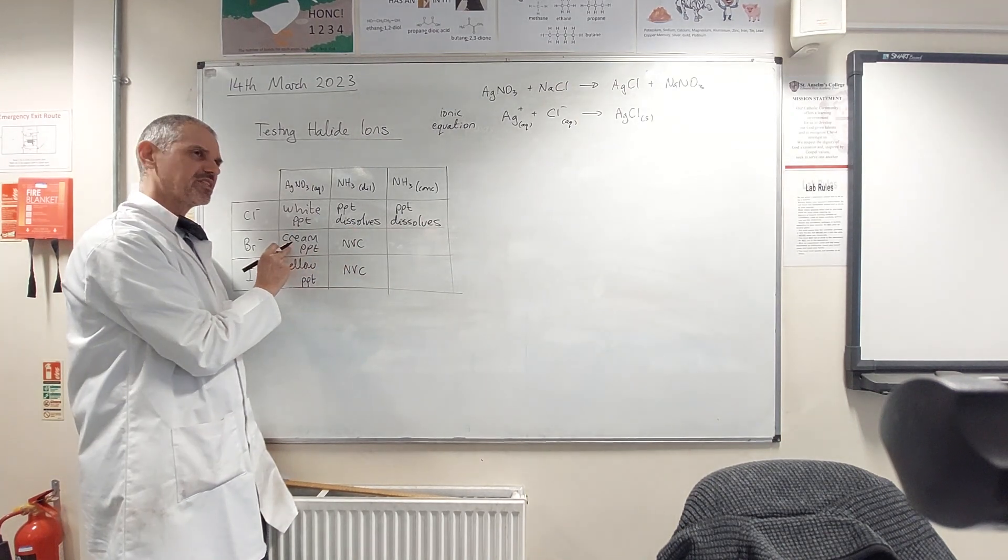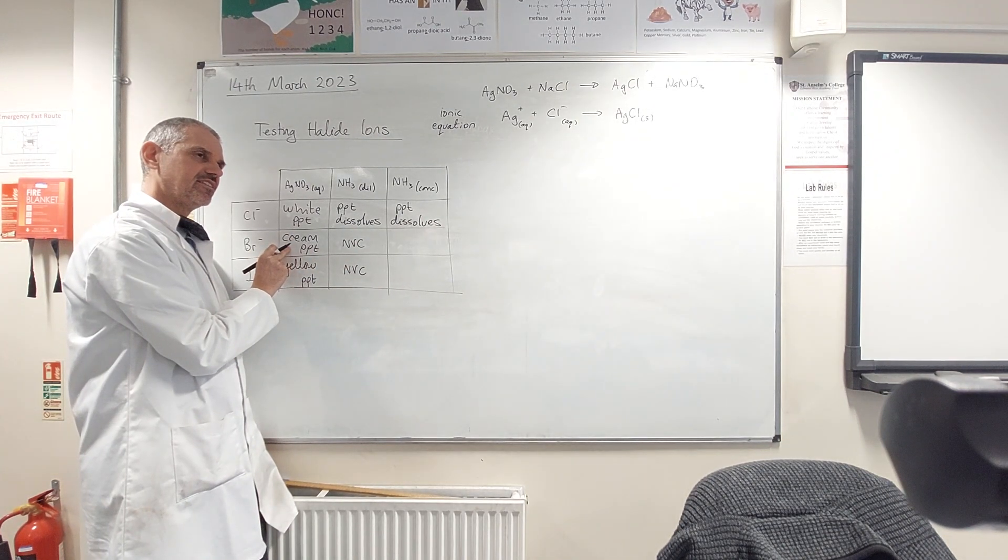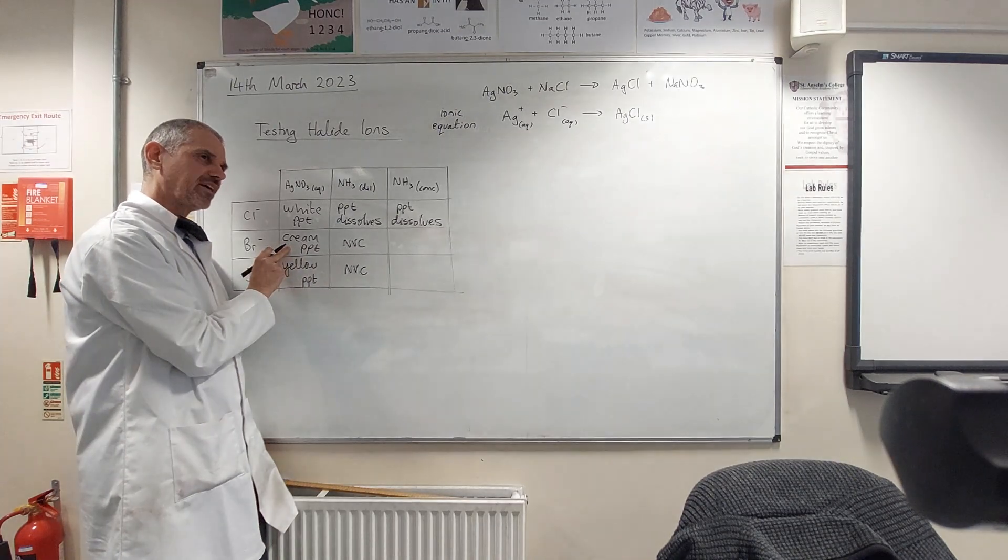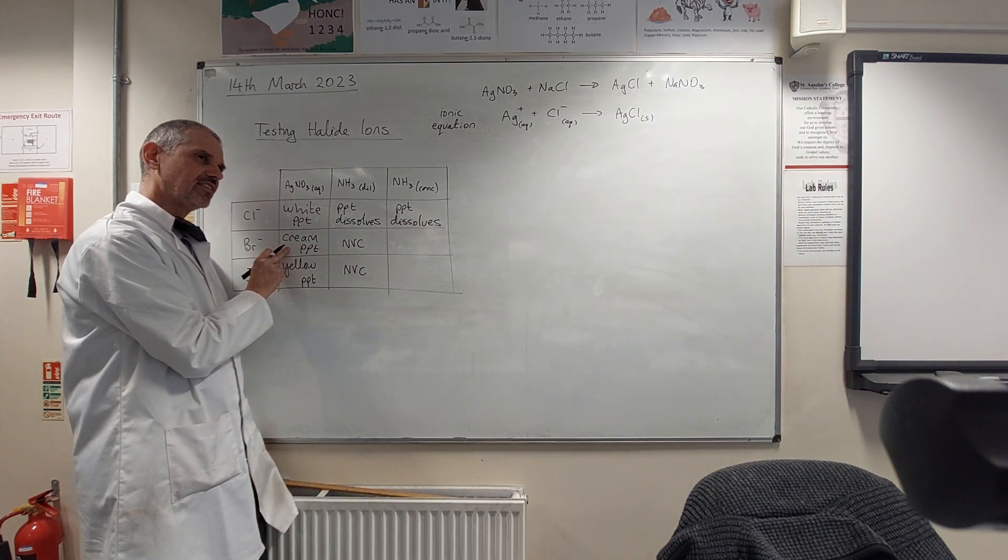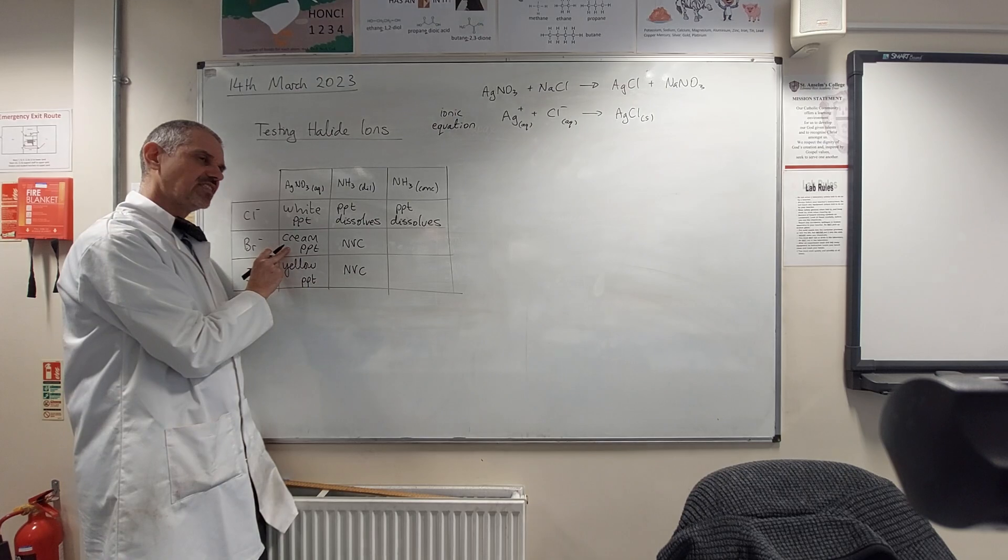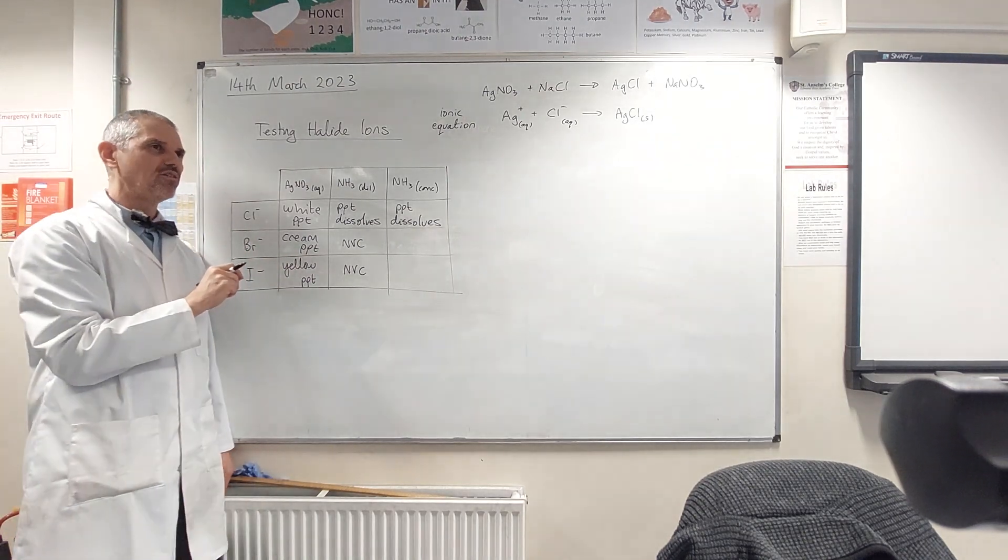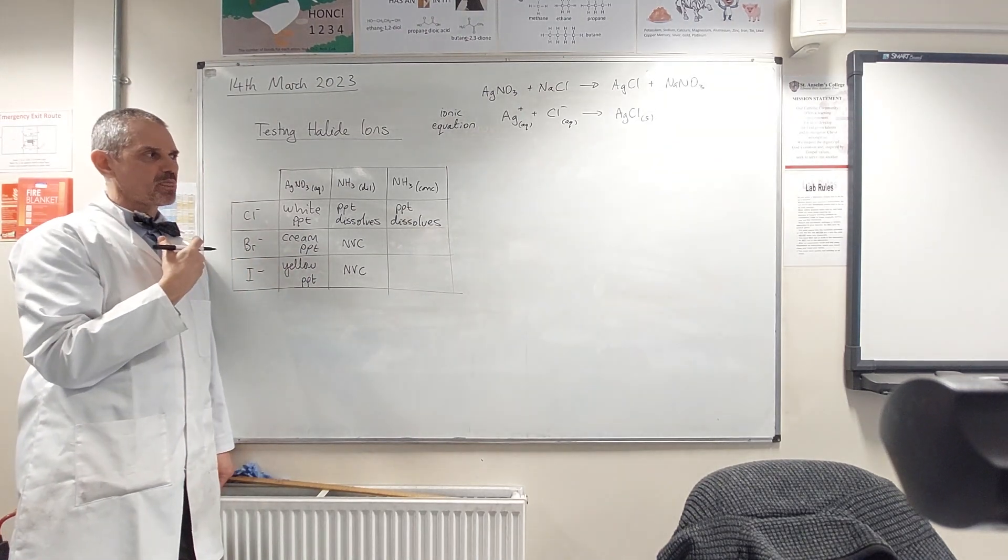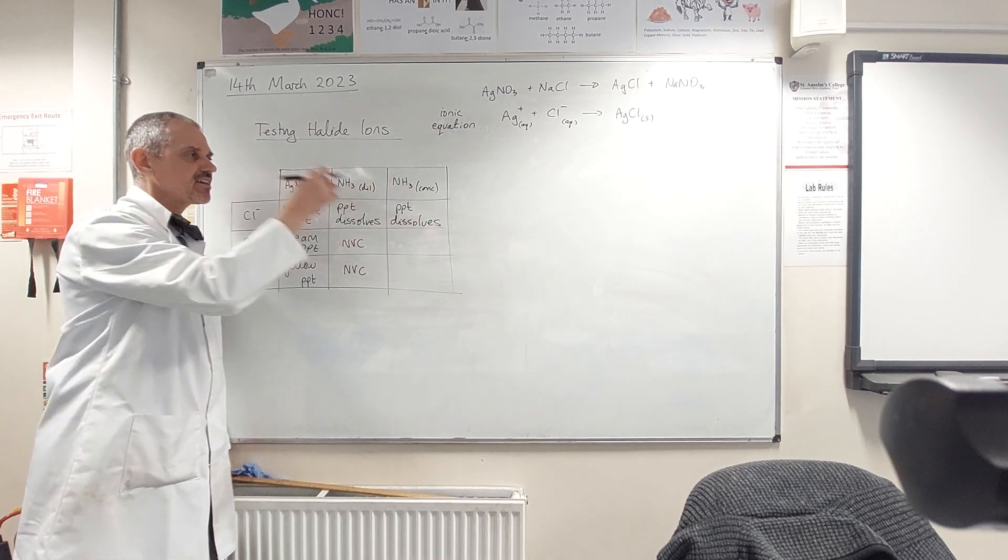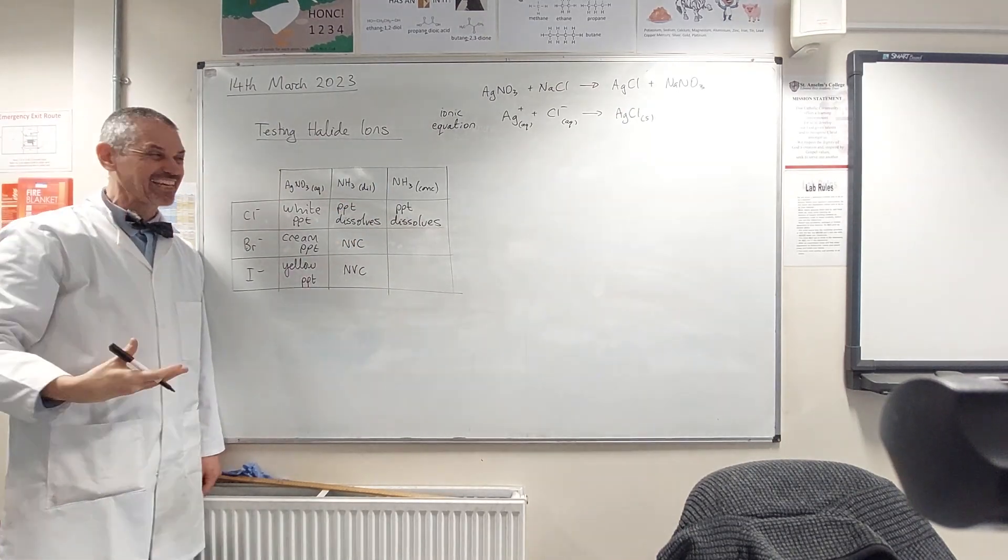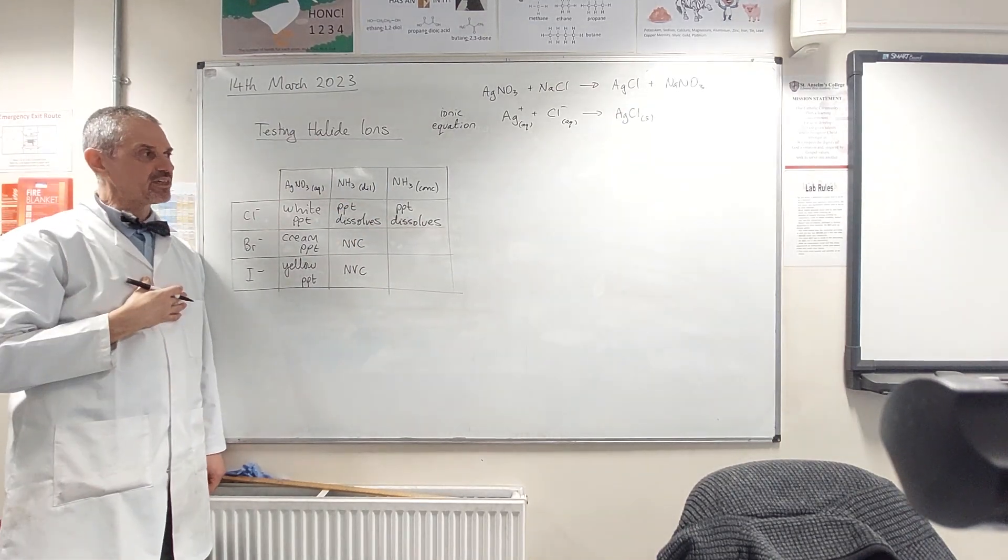No, we're adding conch ammonia to the cream precipitate. So we've got a precipitate forming because it's already there. I don't see anything else happening. Okay, we might just need to add a bit more because the reason we're adding conch ammonia is to add like an excess of ammonia is what we're looking for there.